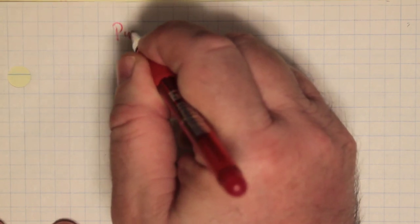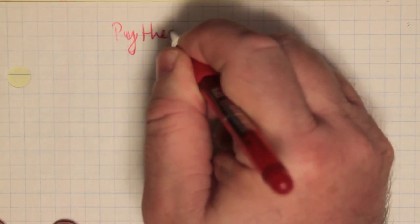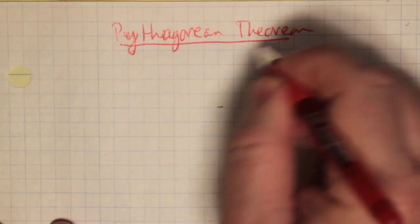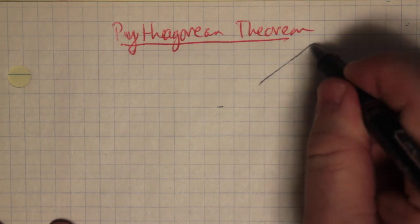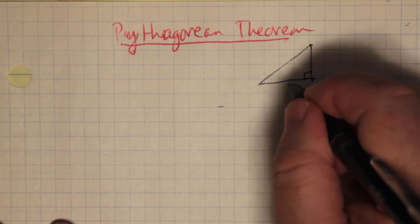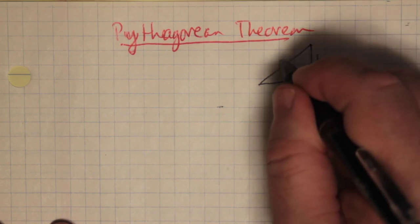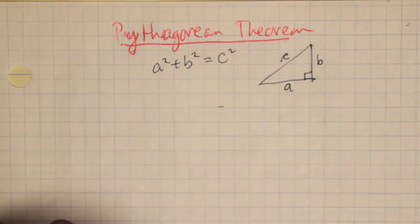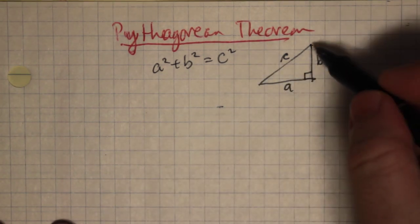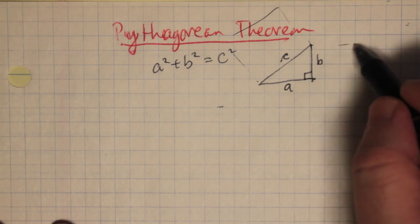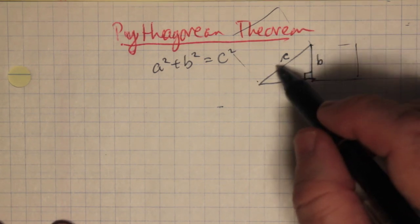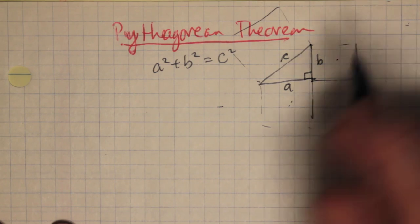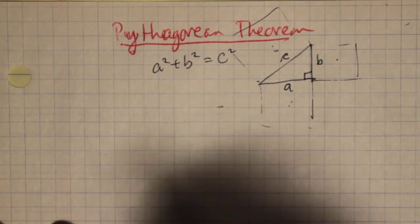What about the Pythagorean theorem? You probably know this one. The Pythagorean theorem states that for some right-angled triangle whose sides can be denoted as A and B, and whose hypotenuse is C, that A squared plus B squared equals C squared. You can actually form this concept by imagining these to be distinct squares — the area of the A-square plus the area of the B-square equals the area of the C-square.